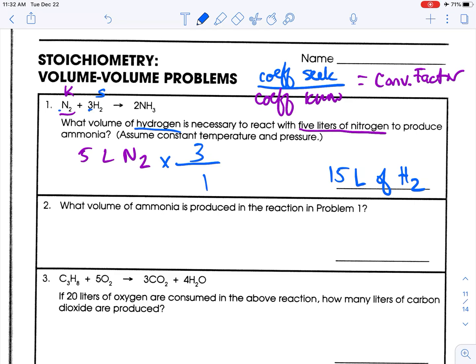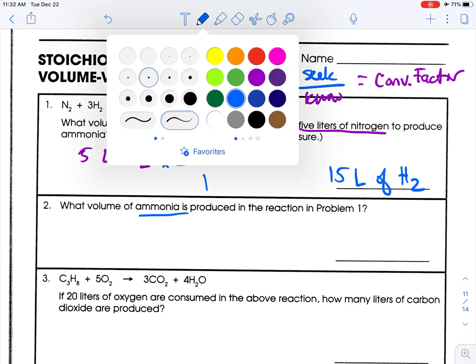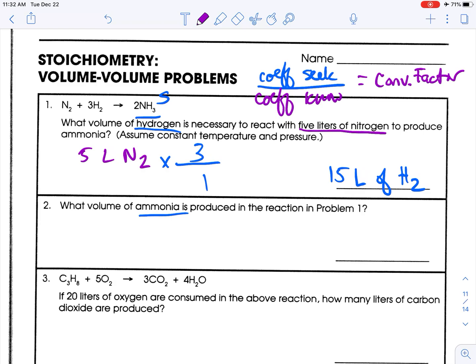What volume of ammonia is produced in the reaction of problem 1? So we're going to have the same known. So the seek is ammonia this time. So let me go back up here. What I seek is ammonia. And what I know is my 5 liters of nitrogen. So again, 5 liters of nitrogen, and so my coefficient of that is 1. What I seek this time is ammonia, so that's a 2. So 5 times 2 is 10, divided by 1 is 10 liters of ammonia.